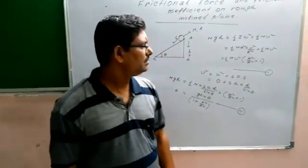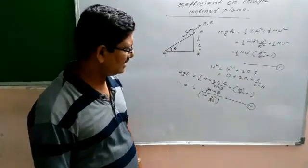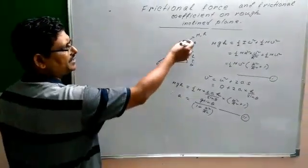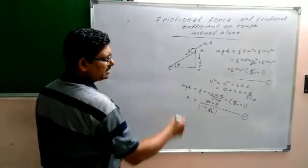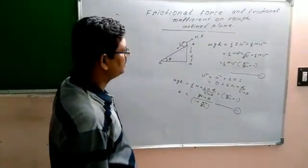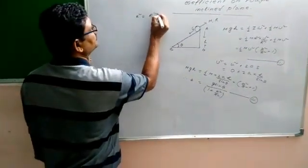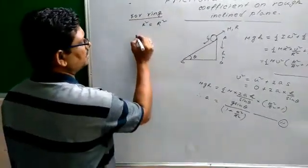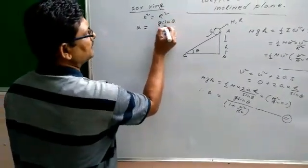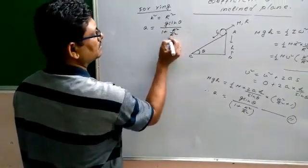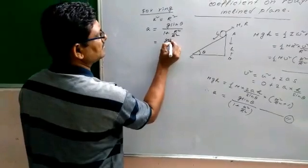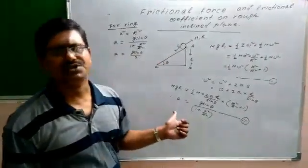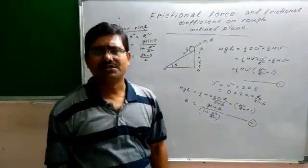From equation two, we can calculate the acceleration for any body based on its radius of gyration k. For example, let a ring rotate and move along the inclined plane. For a ring, k squared equals r squared. So the acceleration becomes g sine theta divided by (1 plus r squared by r squared), which gives g sine theta by 2. This is a very important equation, and from it we can calculate the frictional force and frictional coefficient.